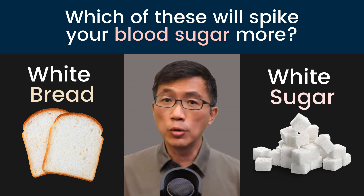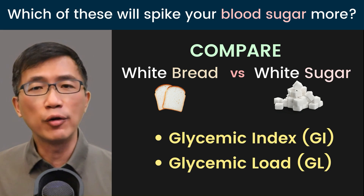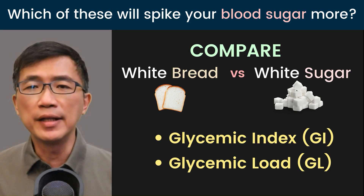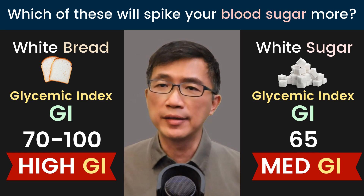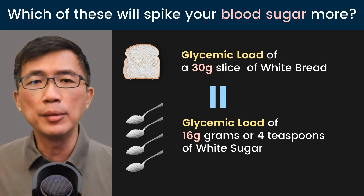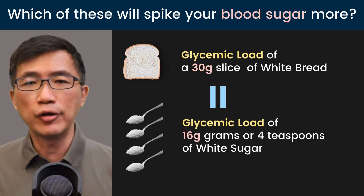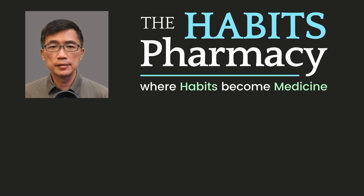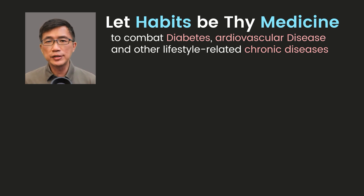So a slice of white bread weighing about 30 grams has a glycemic load equivalent to 16 grams, or about four teaspoons, of white sugar. In summary, white bread has a higher GI than white sugar, and the glycemic load of a 30-gram slice of white bread is equivalent to the glycemic load of 16 grams or four teaspoons of white sugar. I hope you found this episode of Habits Pharmacy useful. I'm Dr. Chan — let your lifestyle and eating habits be your medicine.